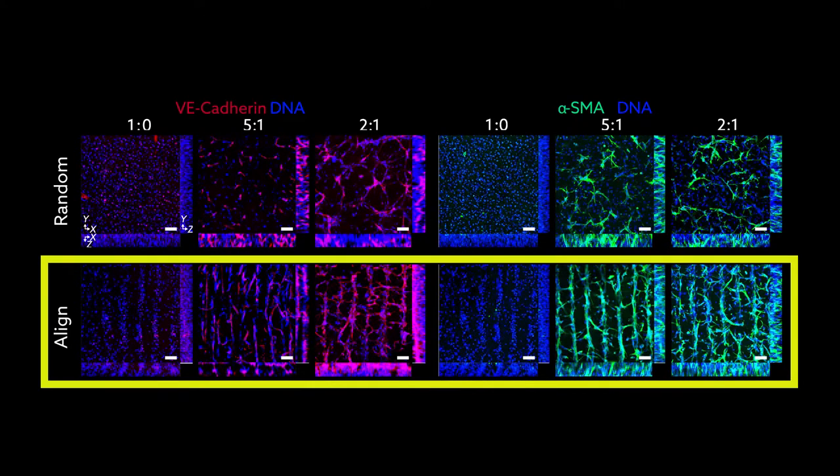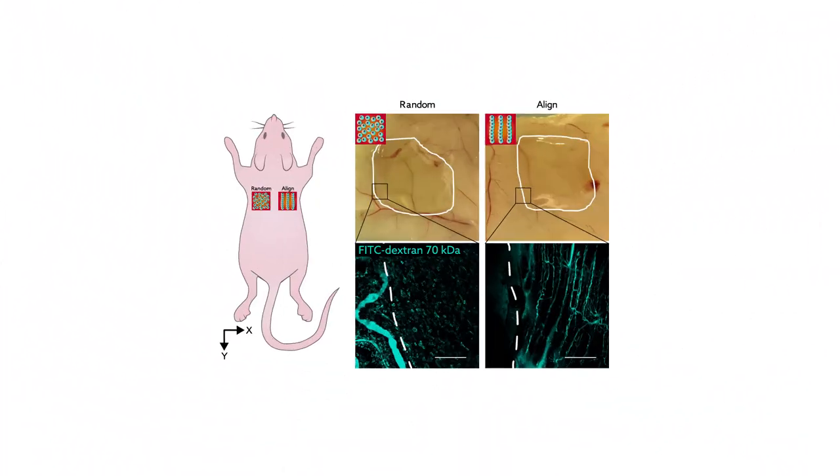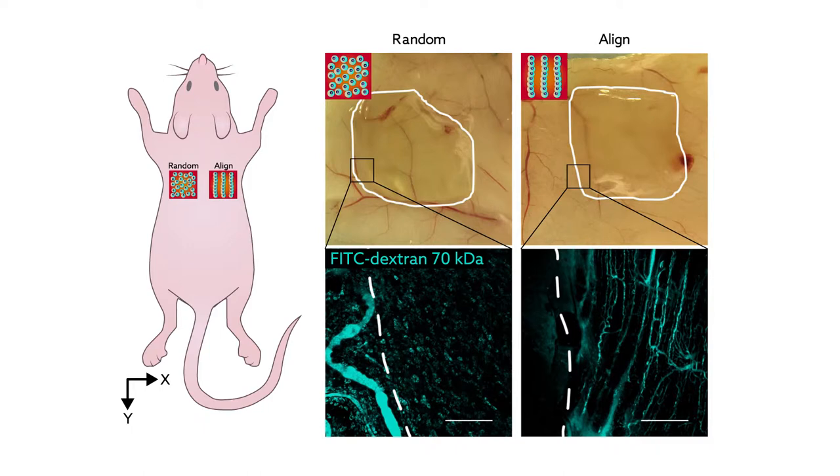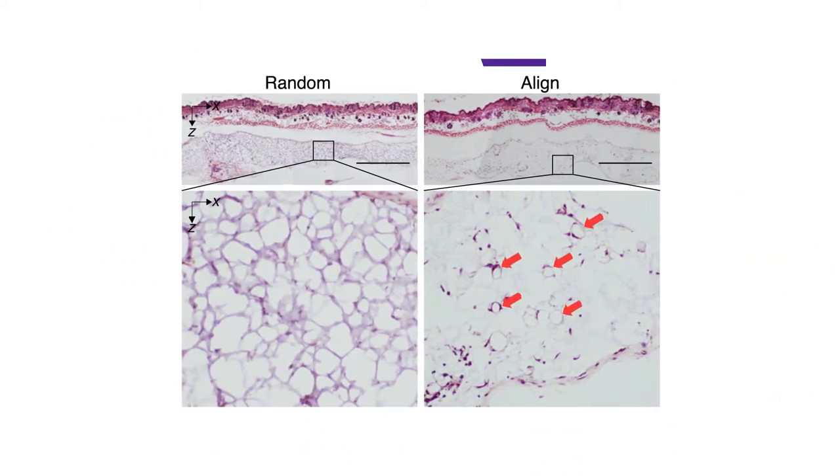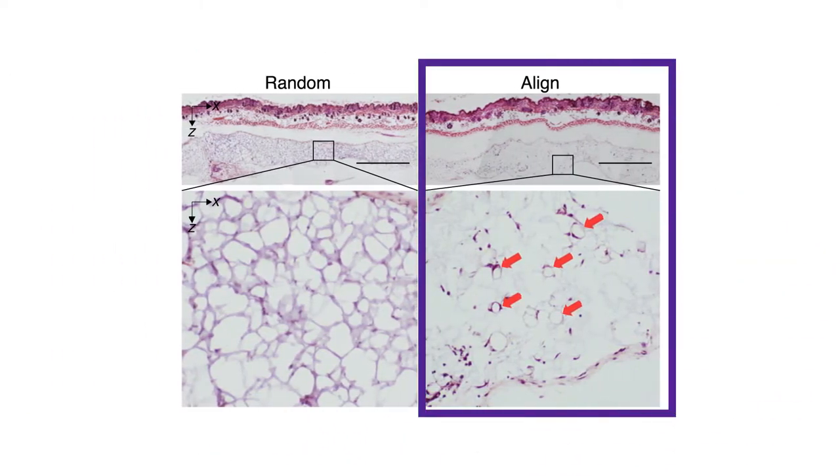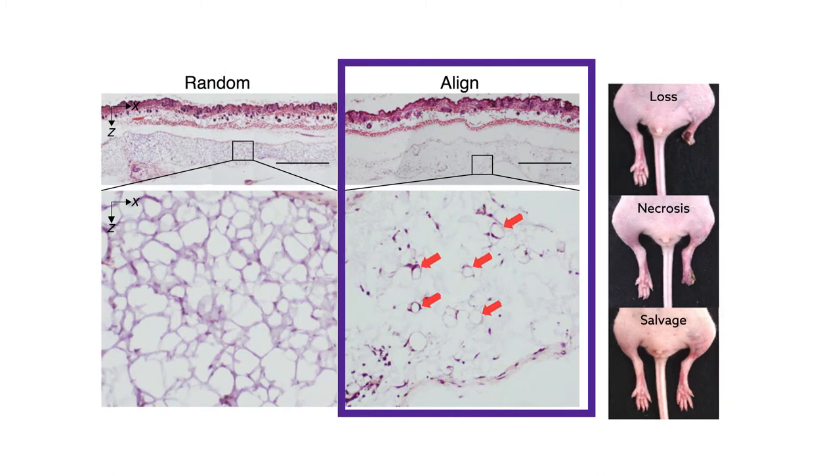But the team still needed to show that artificial vasculature could help repair damage. For that, they transplanted the acoustrophoretically patterned tissues into sites of ischemic injury in mice. The results were quite promising. The animal's native blood vessels actively integrated with the transplants, which provided the blood supply needed to prevent tissue loss.